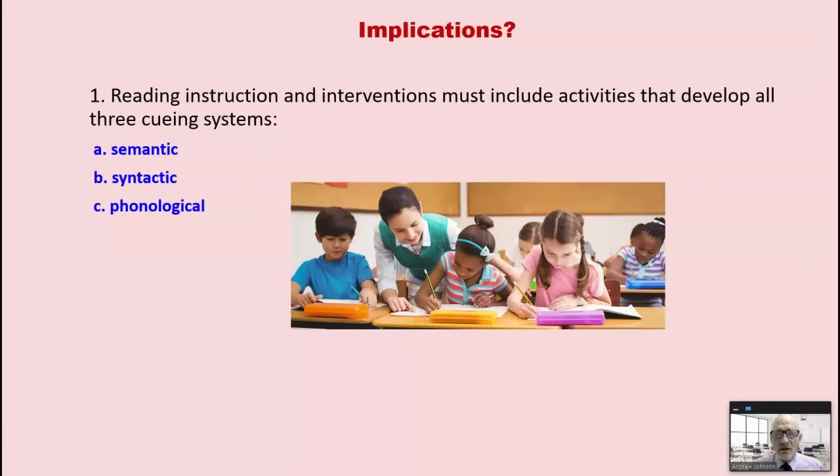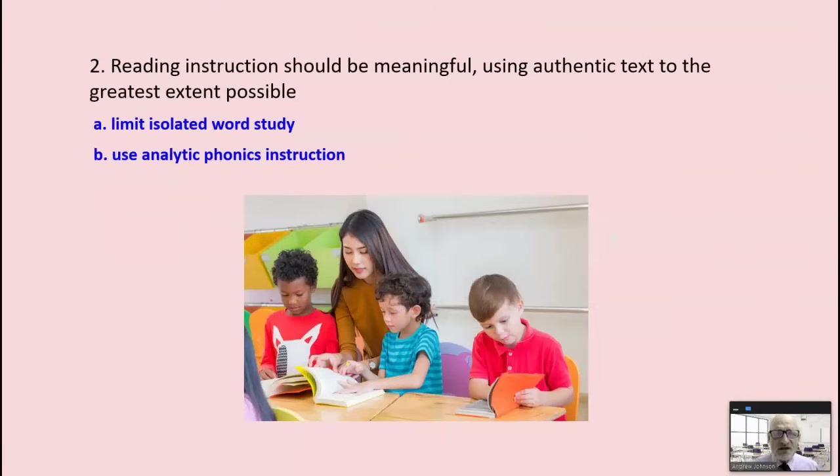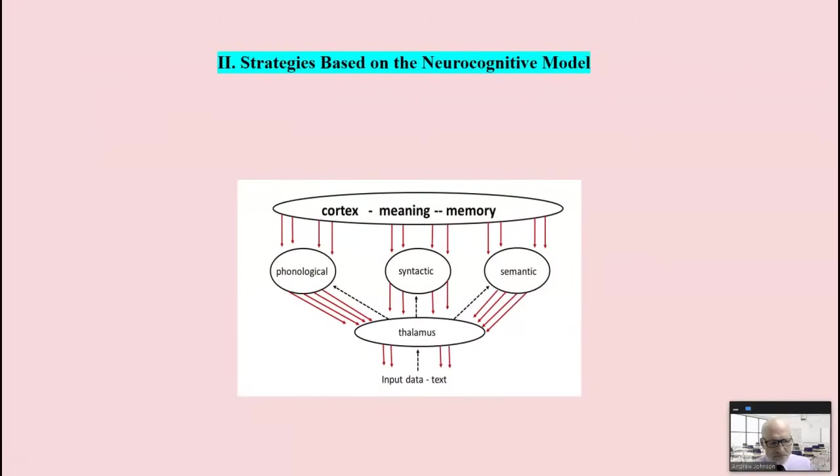So what are the implications? Reading instruction and intervention must include activities that develop all three cueing systems. Reading instruction should be meaningful using real text, not authentic text, to the greatest extent possible. You need to limit isolated word study. Yes, there needs to be some, but as little as possible. That means students should be using analytical phonics instruction in which they analyze words in the context of a sentence or words in the context of what they're reading to the greatest extent possible. And I will show you in my next video some strategies based on the neurocognitive model. Thank you.